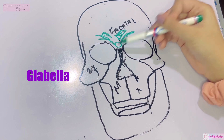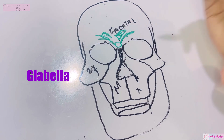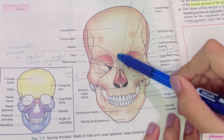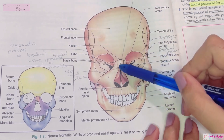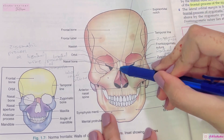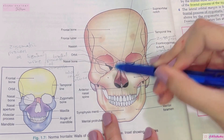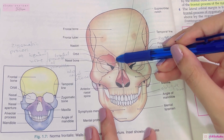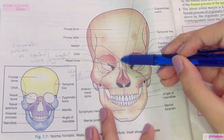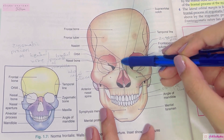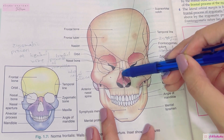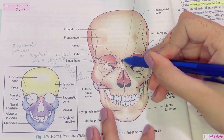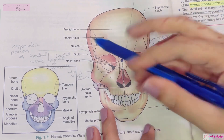When the superciliary arches meet in the midline, they form a median elevation known as the glabella. Just below the glabella is the frontonasal suture, where the frontal bone joins the nasal bones. The two nasal bones join together in the midline at the internasal suture. The point where the internasal suture meets the frontonasal suture is known as the nasion, which lies at the root of the nose.